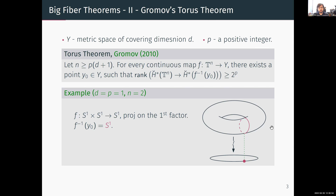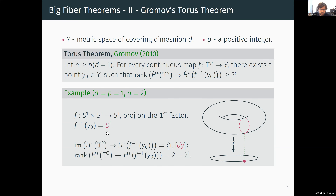This is stated with Čech cohomology for technical reasons which will be apparent later. As an example with the two-torus projected to one factor, the fiber over a point is a circle. The image of the restriction map in cohomology is generated by the unit and by the class dy, so the rank is 2, which is 2 to the power of 1 with p=1. The fiber is complicated enough topologically and it sits inside the torus in a way that its topology is captured by this restriction map.